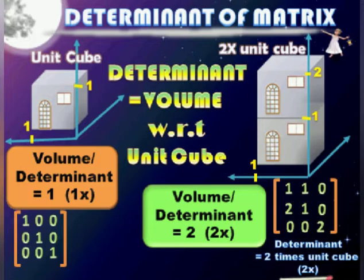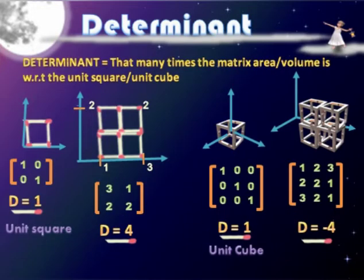If it's a three-by-three matrix, you are dealing with a 3D object, so most probably you're dealing with a 3D object and the determinant will be compared to that of a unit cube. If it's a two by two matrix, most probably you are dealing with a two-dimensional object, so its determinant is relative to that of a unit square. Determinant of a unit square and a unit cube will always be one.